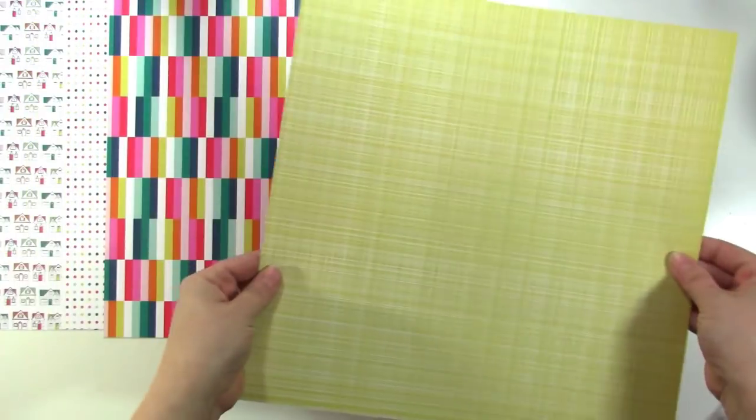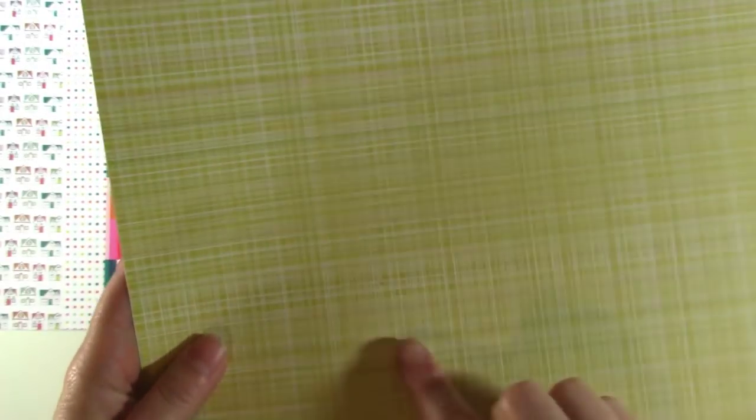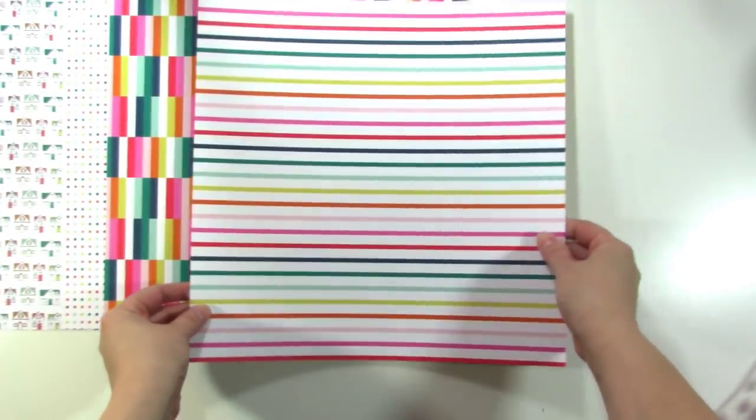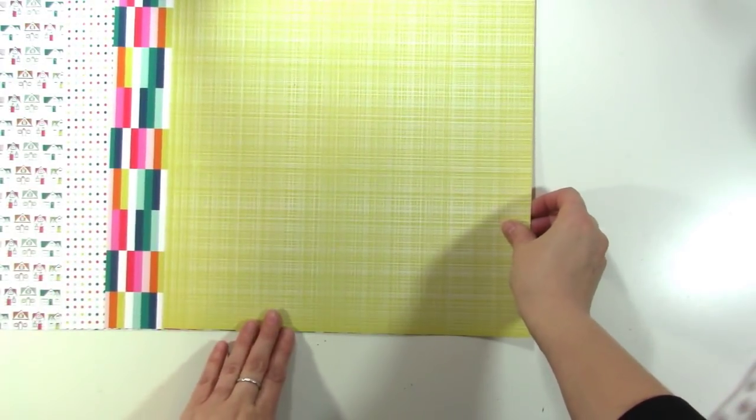Next we have this nice yellow, kind of loose, it kind of looks like a linen texture on top of this paper, white. And then the back side has a nice stripe. So you can see how colorful this kit is, I love it. But I'm going to leave this on the yellow side so our eyes don't go crazy.